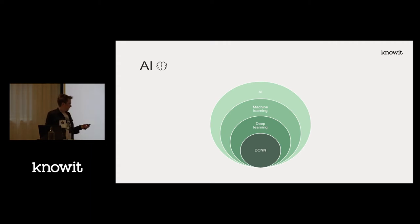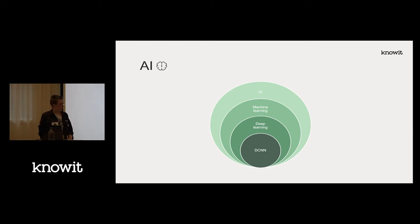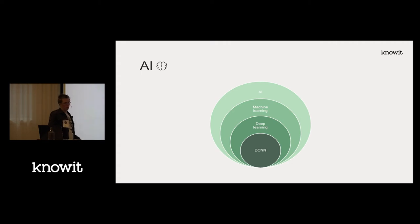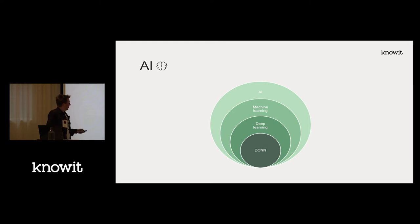Underneath AI we have machine learning, which is a subset. Instead of telling the computer exactly how to deal with every possible thing, you give it some input and a lot of data. One approach is to show it lots of examples — Google does this with their 'are you human' CAPTCHA things, like 'please tell me where all the traffic lights are.' That's Google teaching their self-driving cars what traffic lights look like.